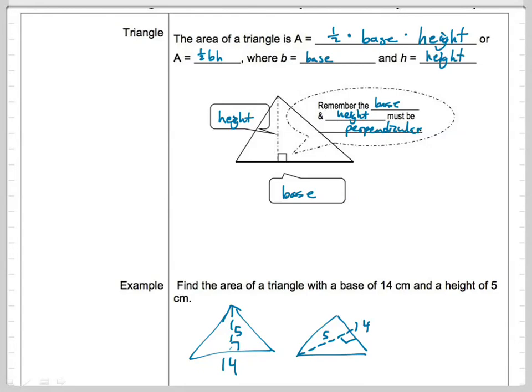So then we go, the area of a triangle is one half base times height. And so what is our base right now? 14. And I like to put the number that's even next to my one half, and I'm multiplying that times 5.